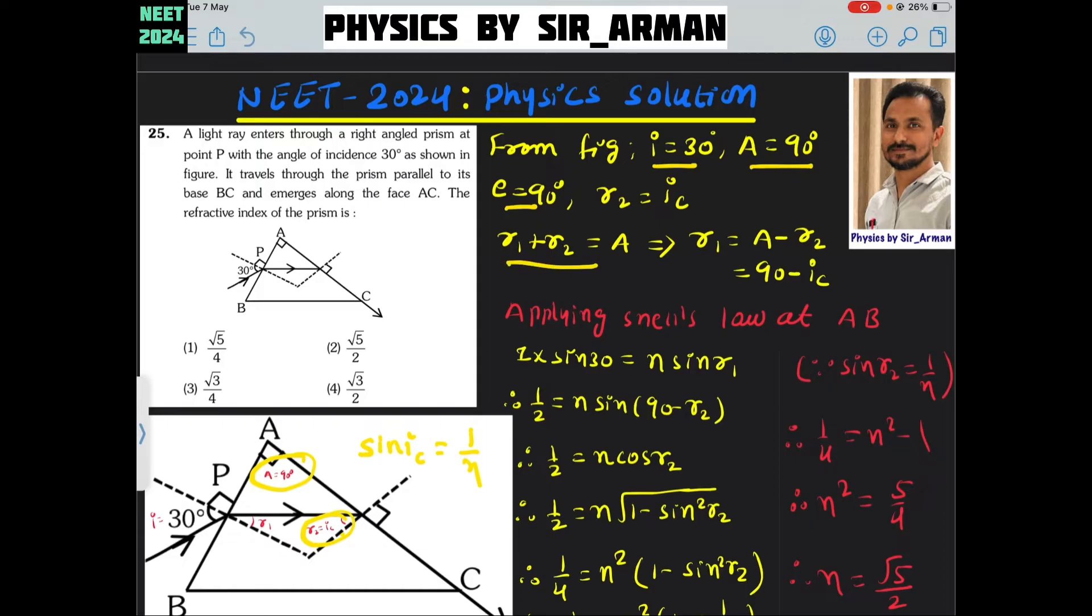From the theory we know that r1 plus r2 equals angle of prism. If you make r1 as a subject you will get A minus r2 where A is 90 and r2 is critical angle. So it is 90 minus ic.